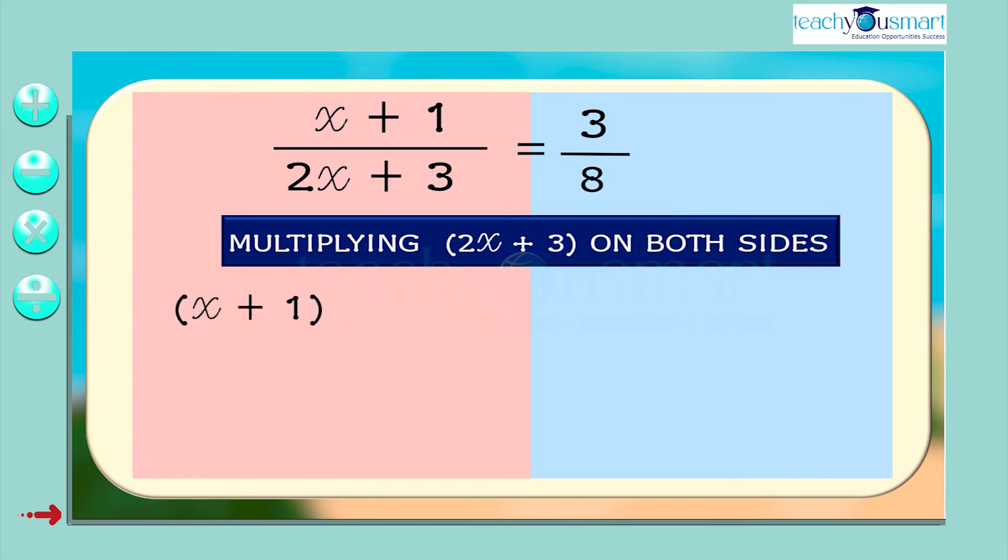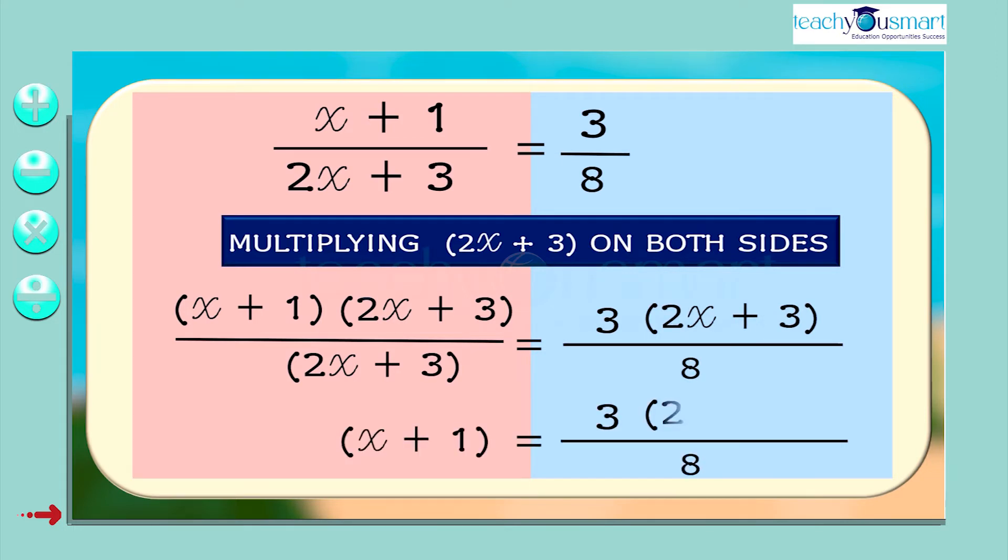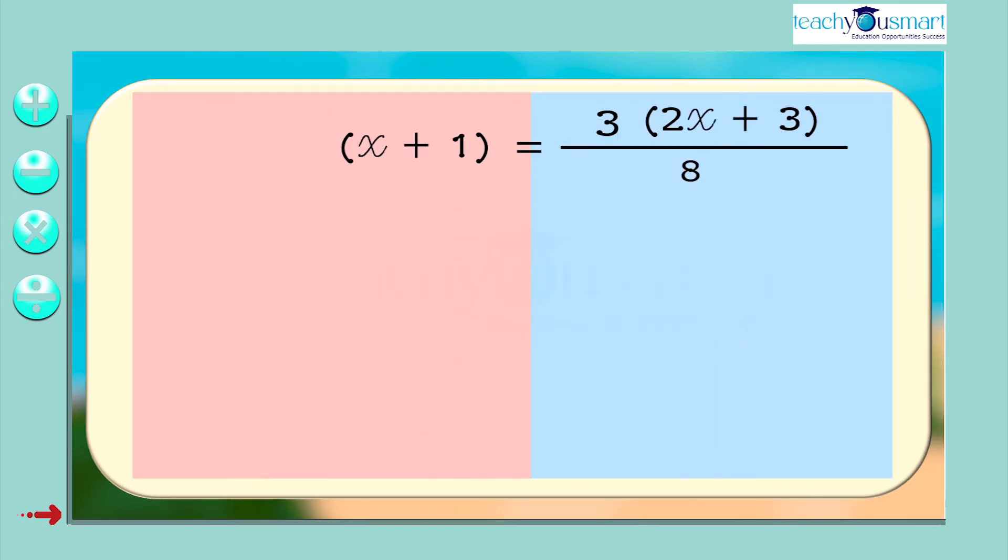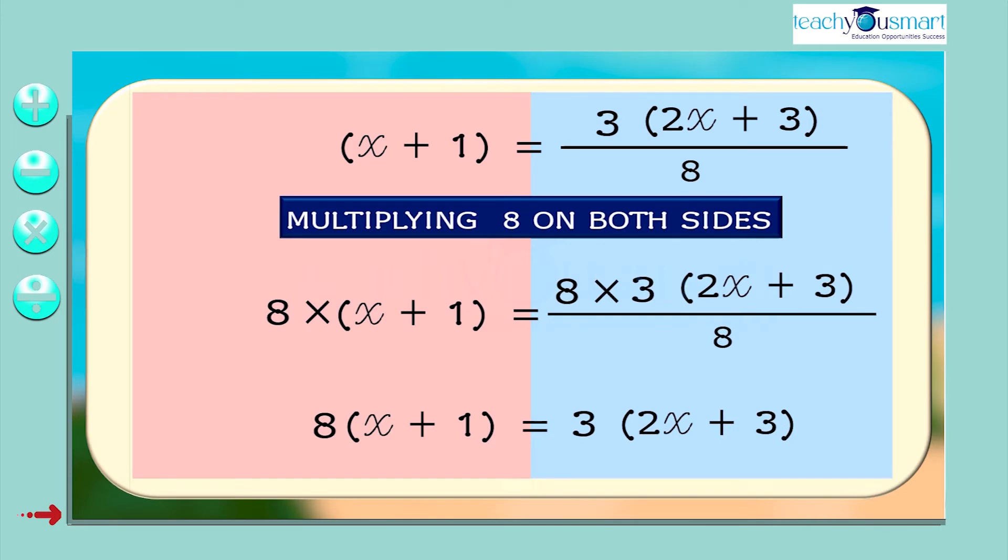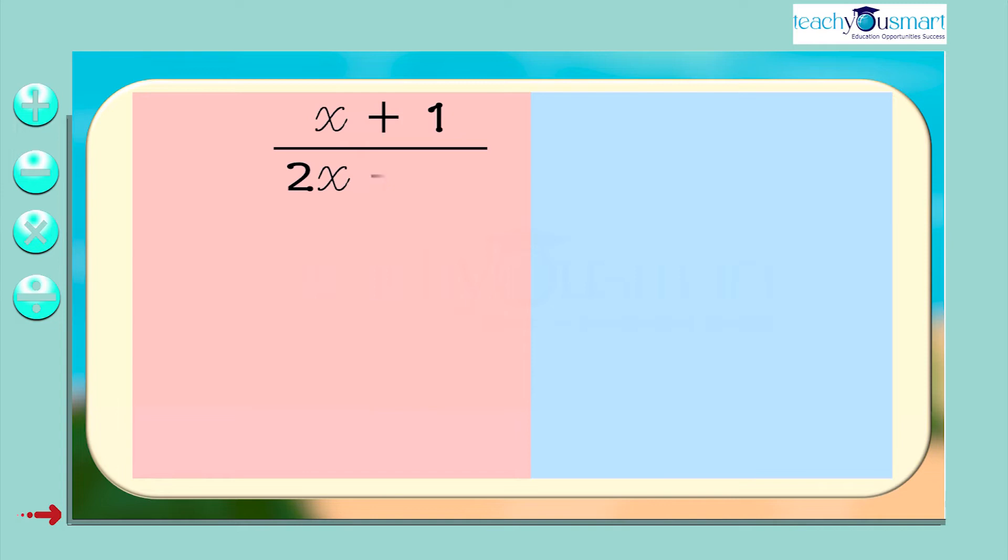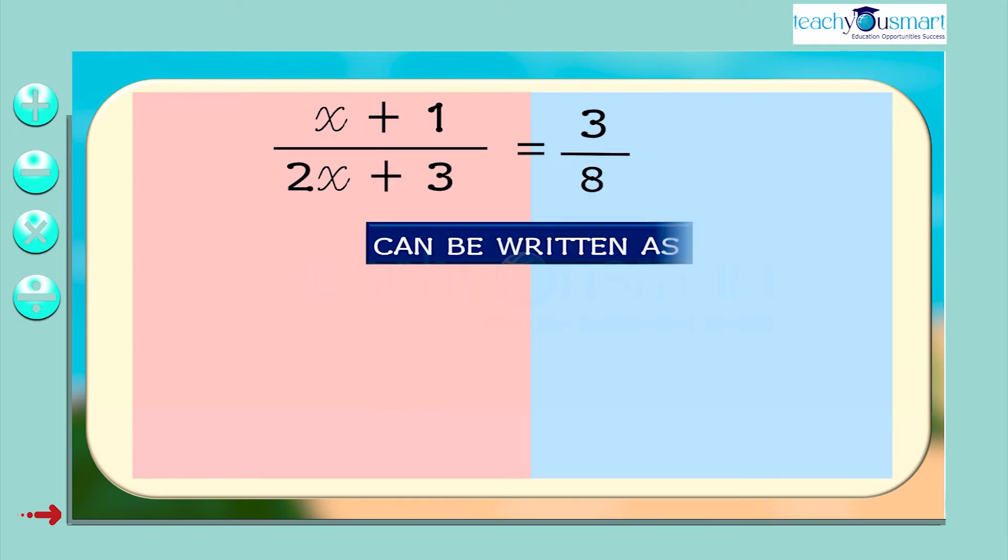That is, x plus 1 multiplied by 2x plus 3. Then multiply 8 on both sides. That is, 8 multiplied by x plus 1 equals 3 multiplied by 2x plus 3. This can be written as 8 multiplied by x plus 1 equals 3 multiplied by 2x plus 3.